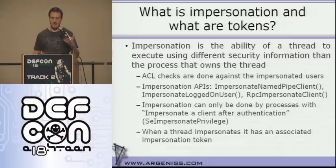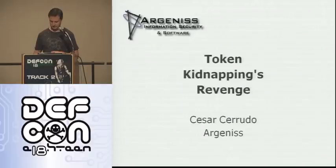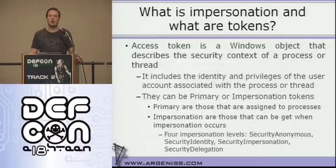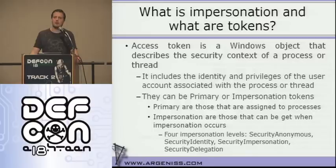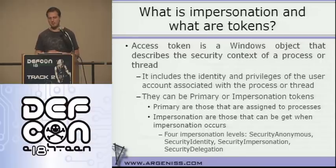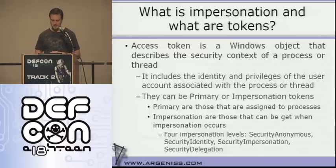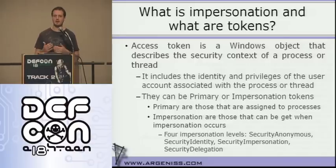When a thread starts to impersonate, it will get an associated impersonation token. A token is a Windows object that has information about the security context of a thread or a process. It includes information such as the identity of the user and the privileges associated with the user. There are two kinds of tokens: primary tokens and impersonation tokens. Primary tokens are those assigned to processes during process creation, and impersonation tokens are those acquired when a thread impersonates. There are different levels of impersonation: anonymous, identity, impersonation, and delegation. We focus on the impersonation level, which is when a thread can act like it's another user.